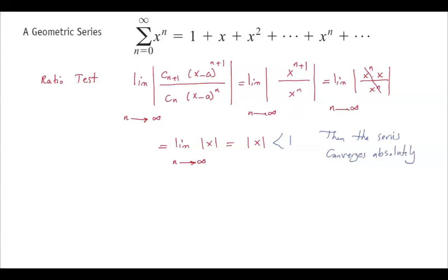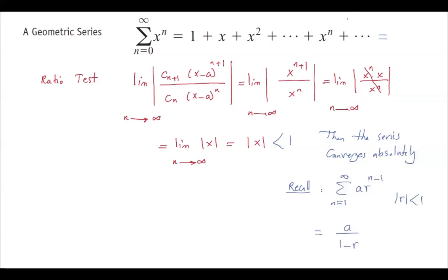But this is what we already know. Remember, for a geometric series sum of a r^{n-1} from 1 to infinity, if the absolute value of r is less than 1, it converges to a divided by (1 minus r). So this series, as long as the absolute value of x is less than 1, converges to 1 divided by (1 minus x).